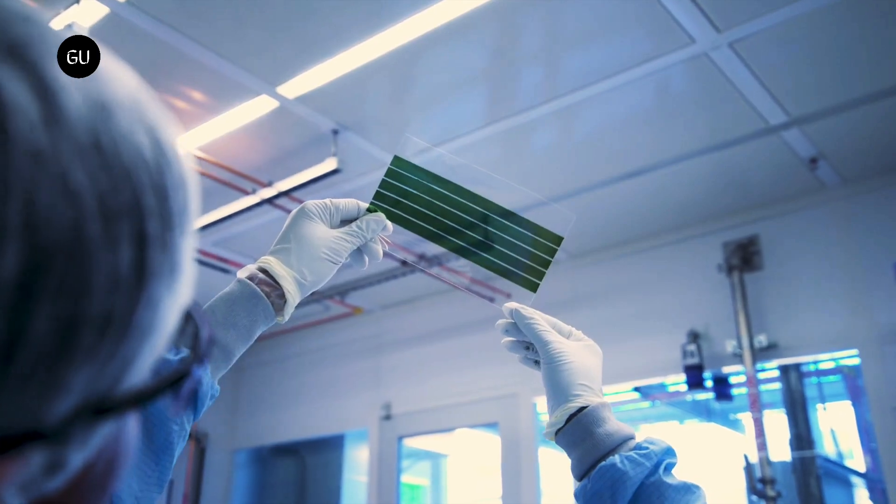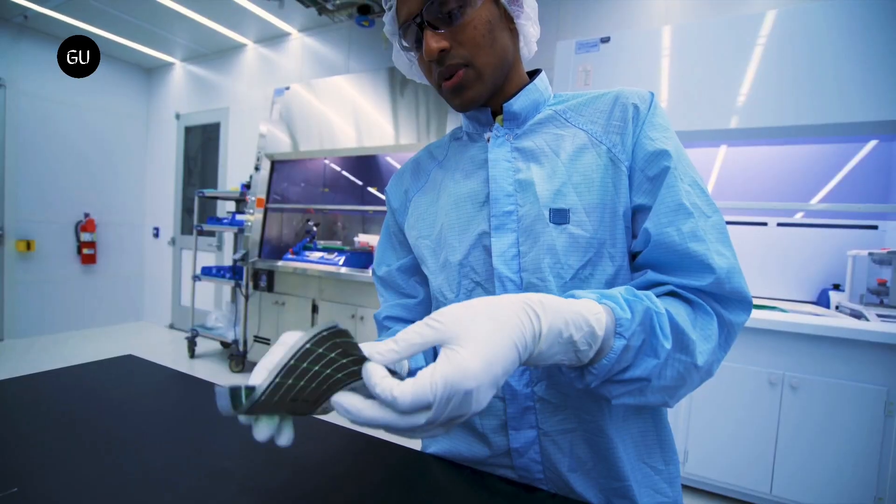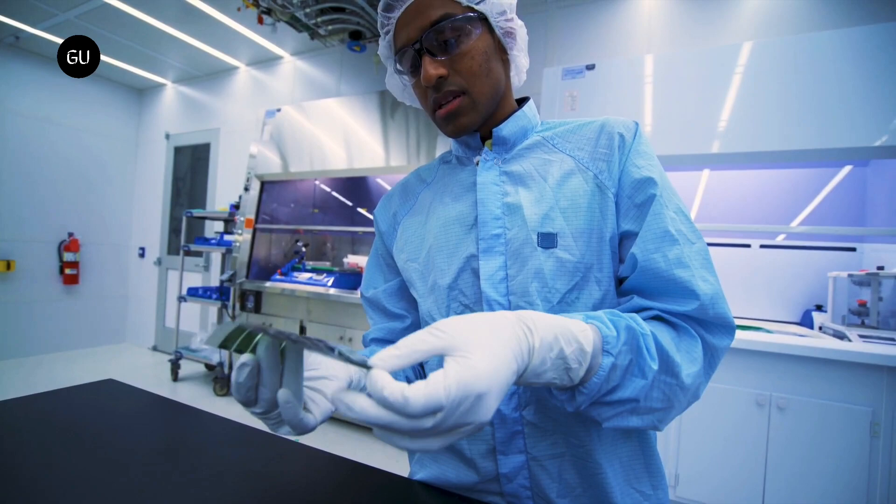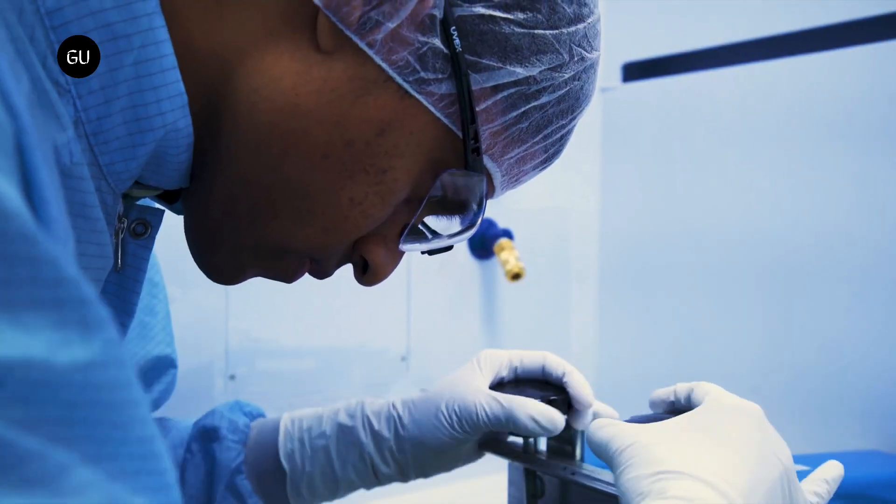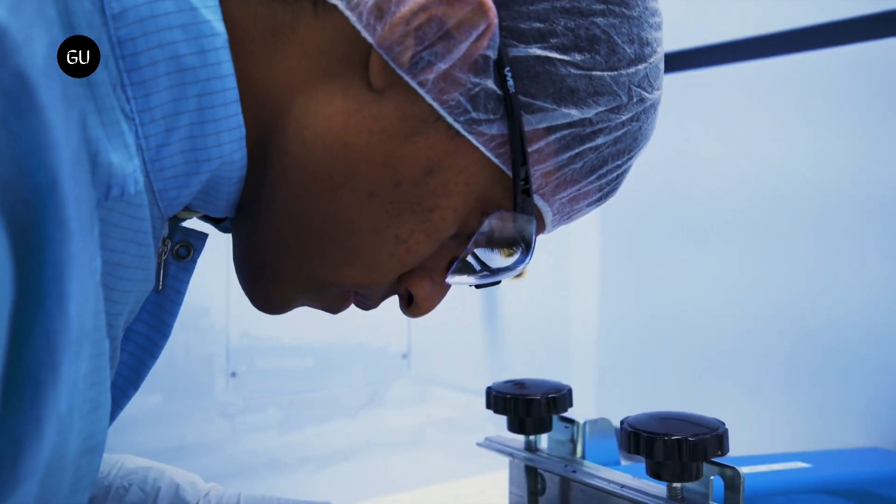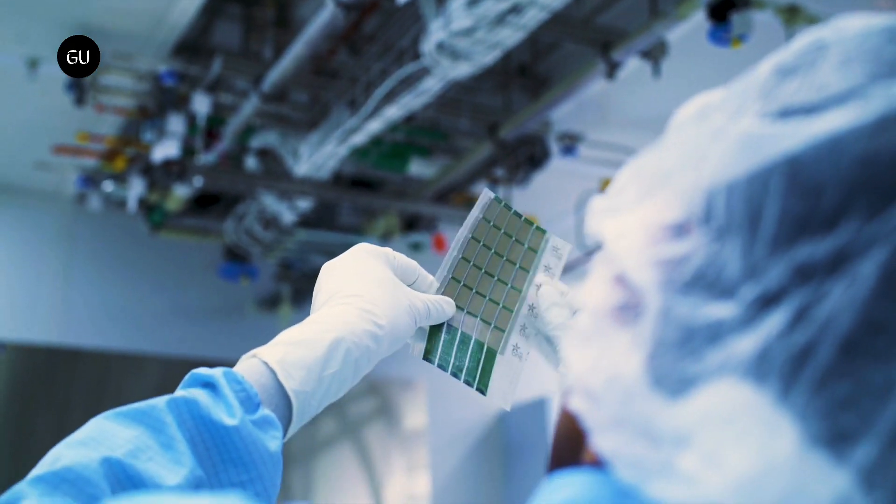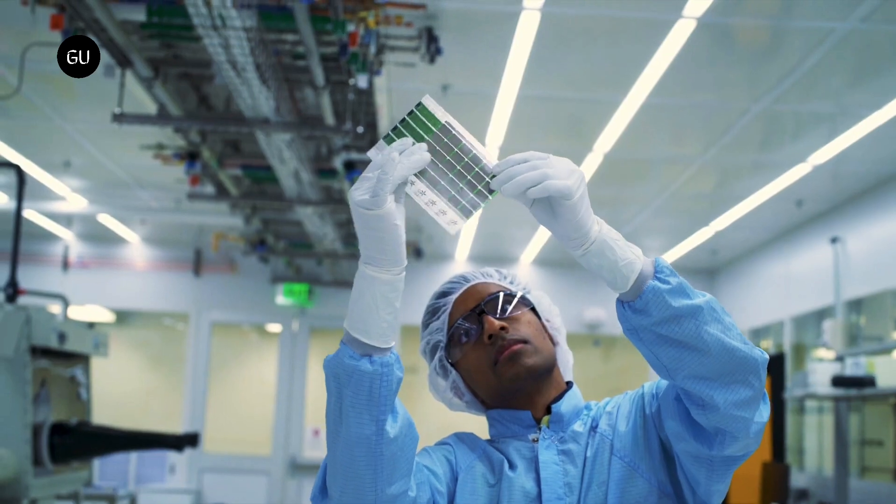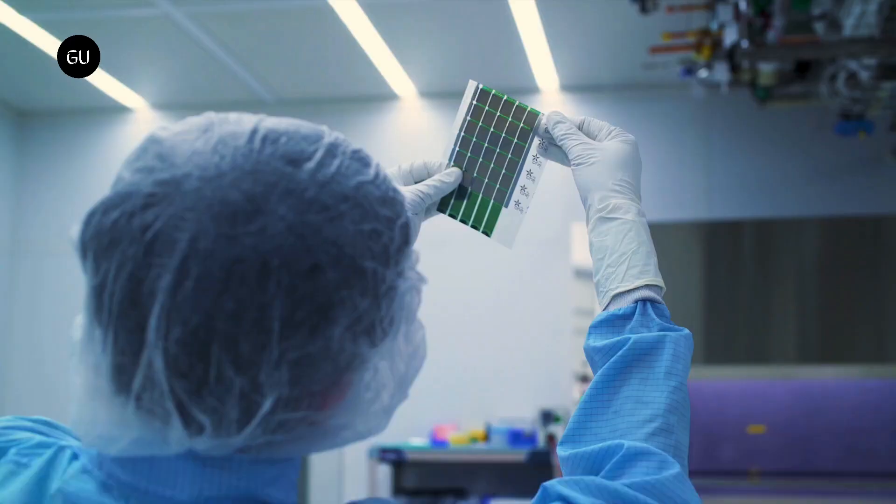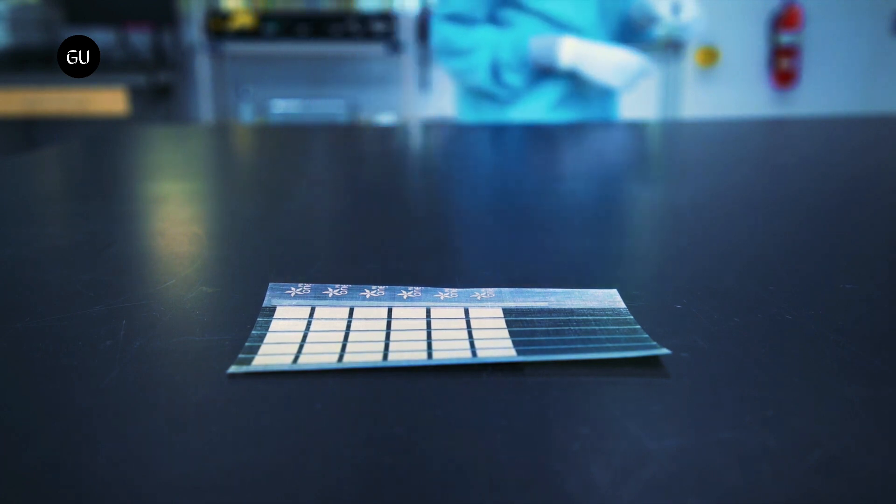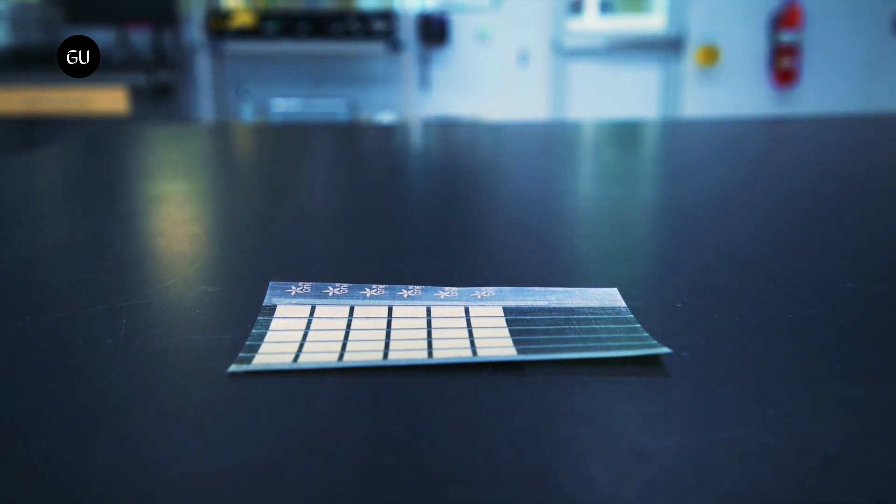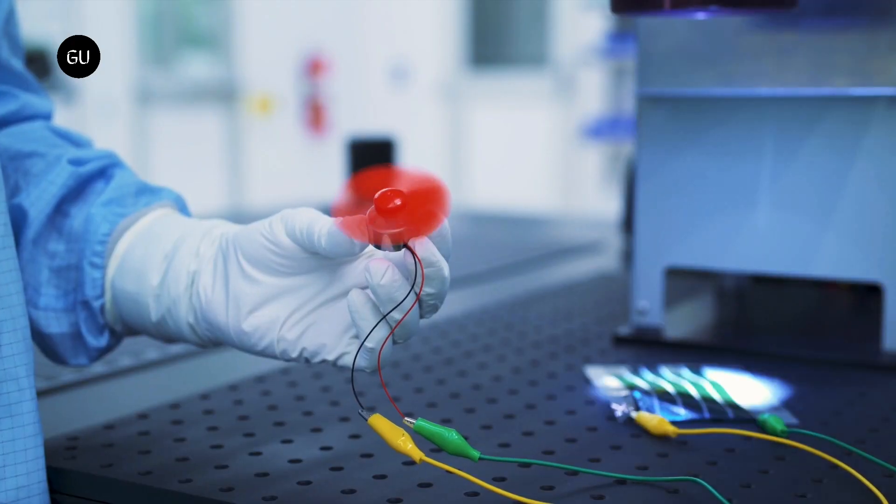But such thin freestanding solar modules are challenging to handle and can easily tear, which would make them difficult to deploy. To solve this challenge, the MIT team searched for a lightweight, flexible, and high-strength substrate they could adhere the solar cells to. They identified fabrics as the optimal solution, as they provide mechanical resilience and flexibility with little added weight. They found an ideal material, a composite fabric that weighs only 13 grams per square meter, commercially known as Dyneema.